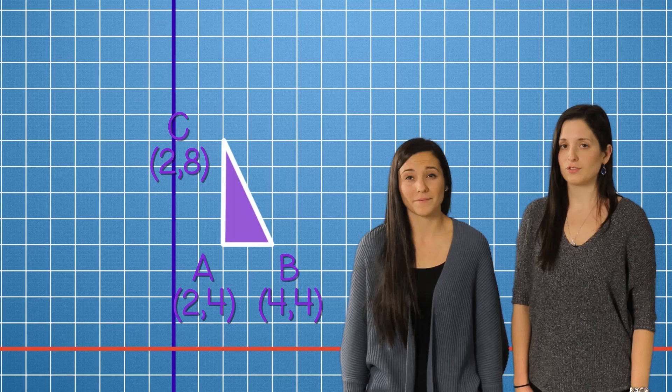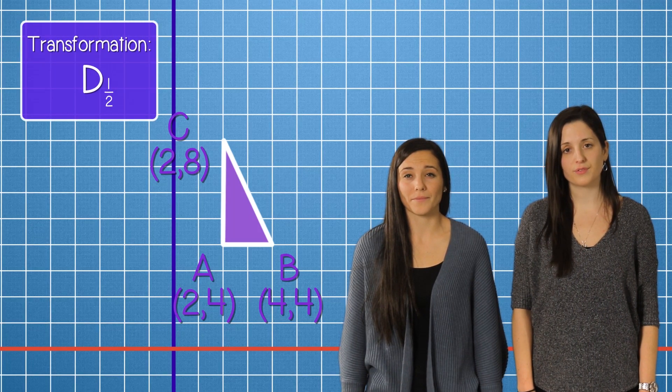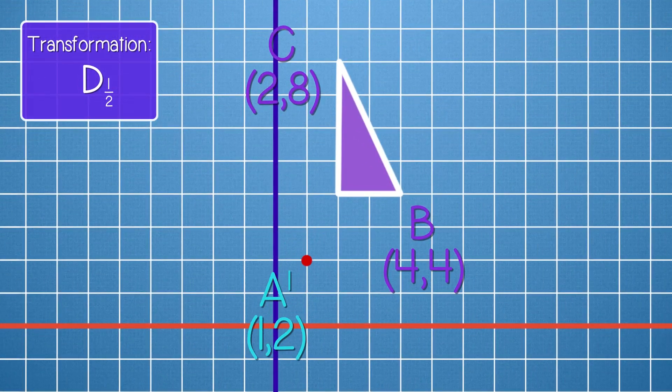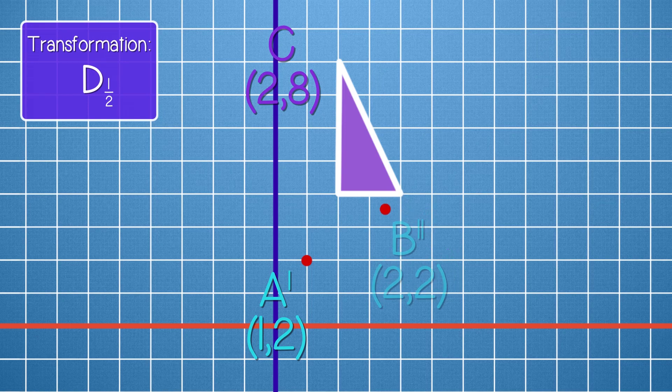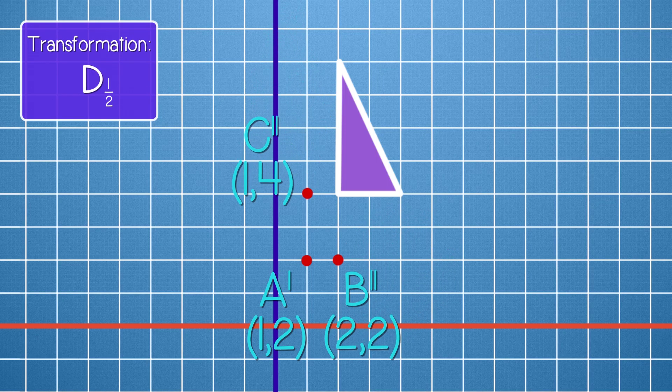What if we took our original shape and dilated by a scale factor of 1 half? Our first vertex, A, becomes 1, 2. Our second vertex, B, becomes 2, 2. And our third vertex becomes 1, 4.